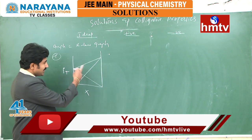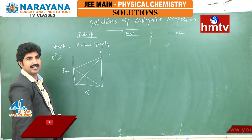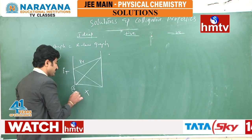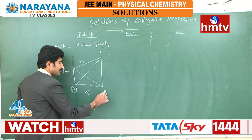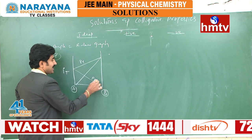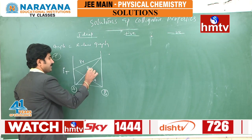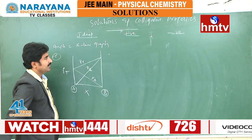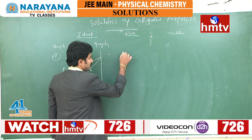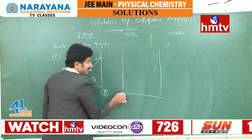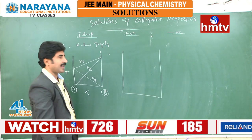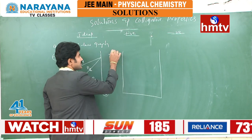In an ideal solution, we get a graph like this: this is the P total, this is pure A, this is pure B, this is the PA line, and this is the PB line. Whereas in a positive deviation, the experimental values are more than the calculated values.